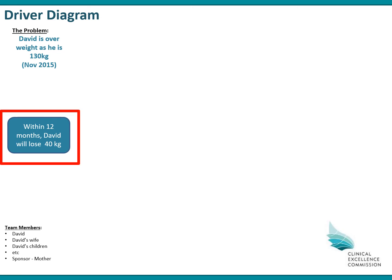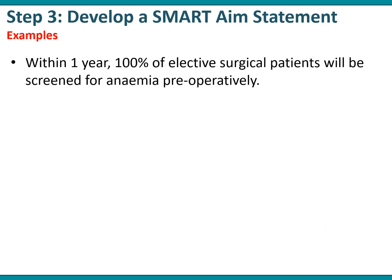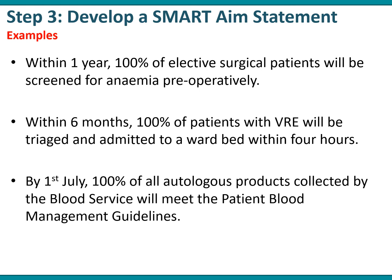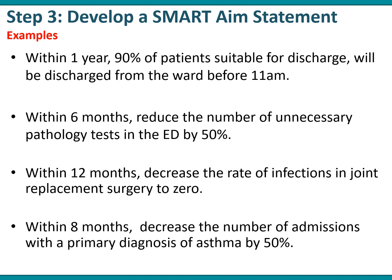With the driver diagram, you put the aim statement on the left-hand side. Here are some examples of aim statements from past participants of the executive CLP and foundational CLP programs at the CEC. For example: within one year, 100% of elective surgical patients will be screened for anemia preoperatively. Another: within six months, 100% of patients with VRE will be triaged and admitted to a ward bed within four hours. Another: by the 1st of July, 100% of all autologous products collected by the blood service will meet the patient blood management guidelines. There are also other examples here for you to review at leisure.